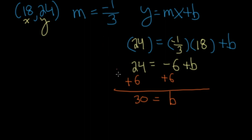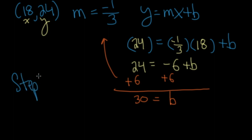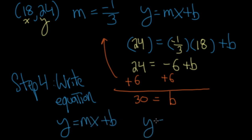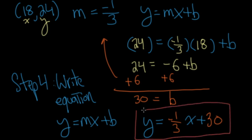Step four is to write the equation. Using slope-intercept form y = mx + b, our m was −1/3 and our b was 30. So the equation is y = −1/3 x + 30. That's the equation we're going to be using for the next part — and the next part is the really awesome stuff.